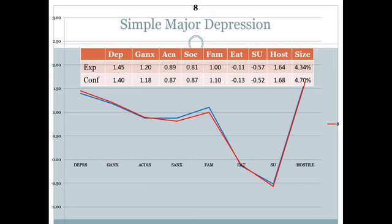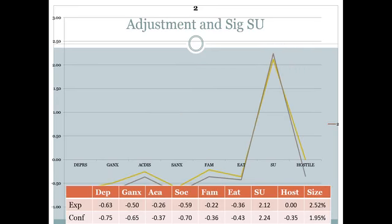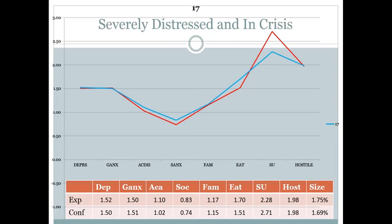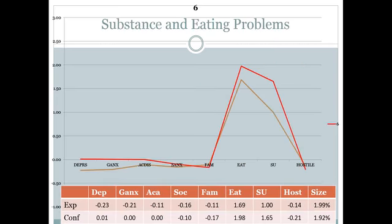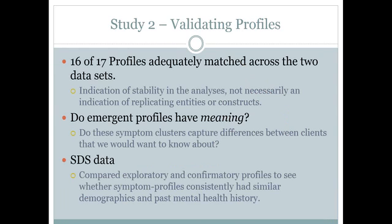One example is a simple major depression profile — elevated on all distress indicators on the left, with some family distress and a lot of hostility. That actually fits well with some models of depression, where depression can either create a lot of anger, be anger turned inward, or people grow so frustrated that they express hostility. Another profile I call adjustment and significant substance use accounted for somewhere between 2 and 2.5% of the sample. The severely distressed in-crisis group was about 1.7%. Substance use and eating problems was about 2%.